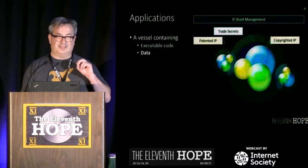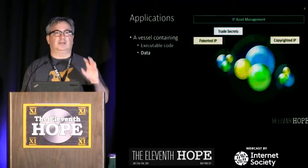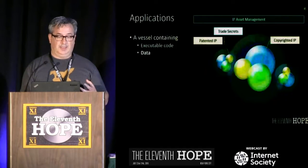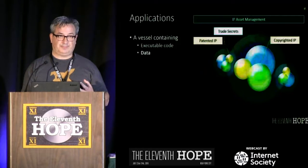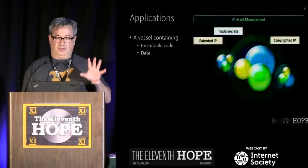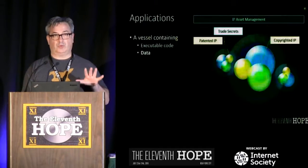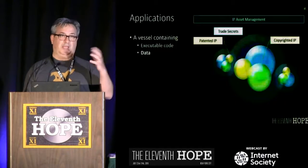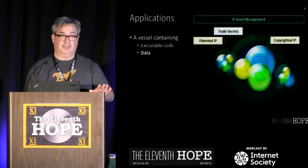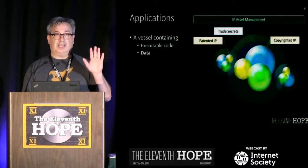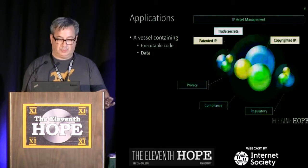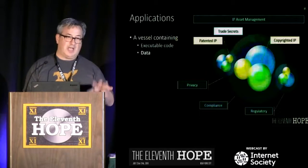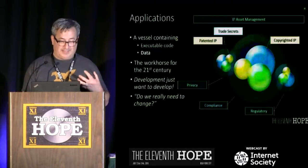Applications are extremely unique. They're not in and of themselves IP — they're a vessel. They include executable code when at rest and almost always include data when running. Inside both code and data can be patented intellectual property, trade secrets, and copyrighted IP — and they're not mutually exclusive. The overlaying of trade secrets with soon-to-be-patented IP is quite common. Besides IP asset management, there are also governance and compliance issues around privacy and other regulatory obligations. Applications are literally the workhorse of the 21st century economy, and developers just want to develop.